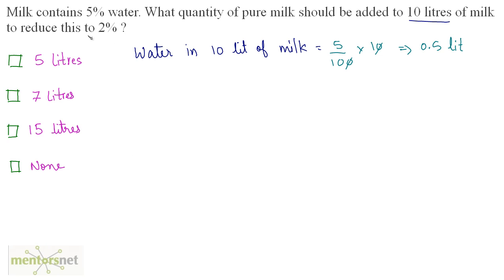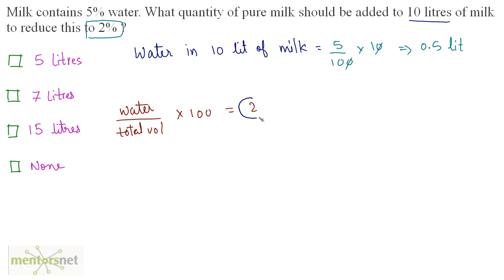Now, the required percentage of water in milk is 2%. The expression for the required percentage is: water divided by total volume times 100 = 2%. This 2% will come only when we add some more pure milk to the complete solution. Because if we add milk, the percentage of water will be reduced. The water in the 10 liters will remain as it is — 0.5 liters — and the total volume will be increased by the amount of milk that we add.